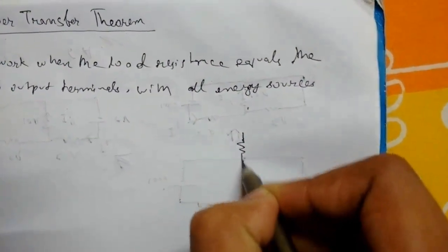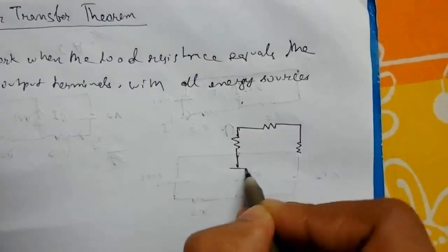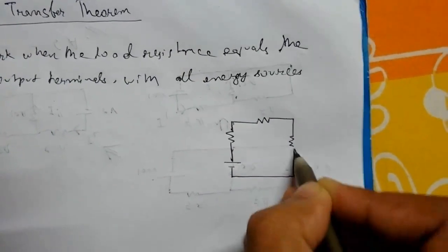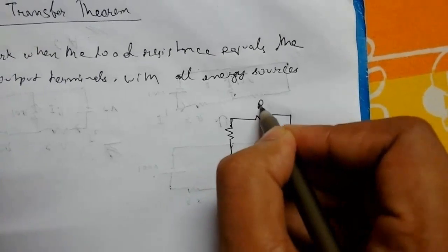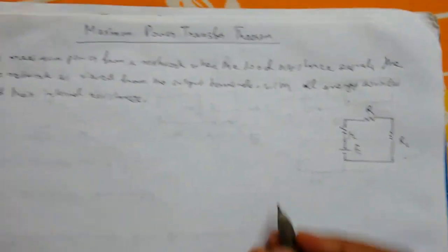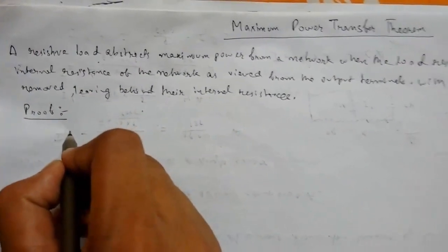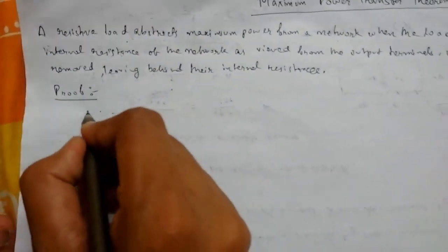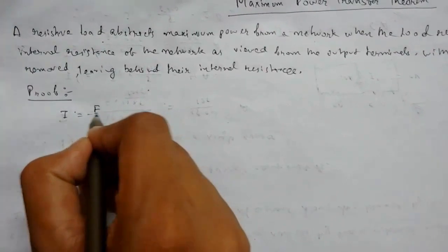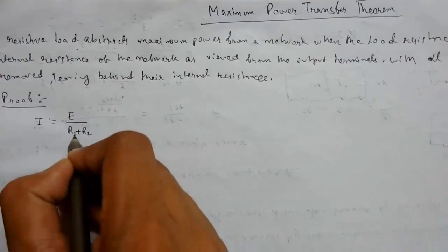which will be like this. Suppose this is load resistance RL, this is internal resistance RI, and this is the EMF E. Let us assume that current I flows, so I will be equal to E upon (RI + RL)